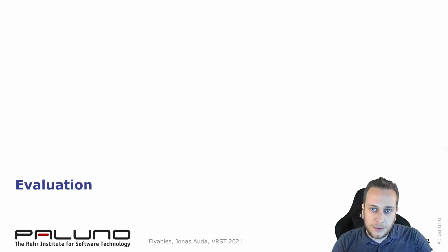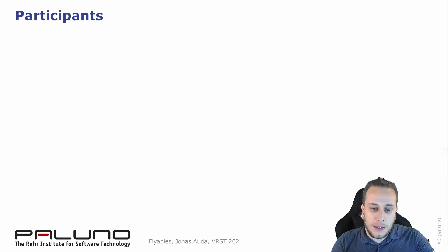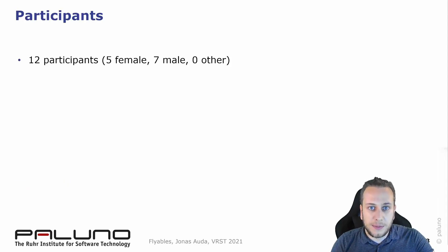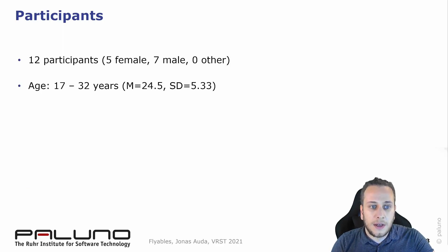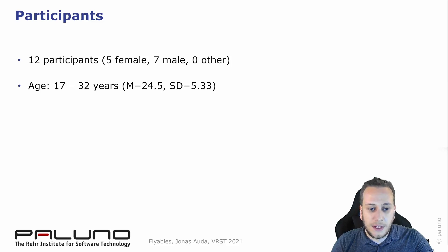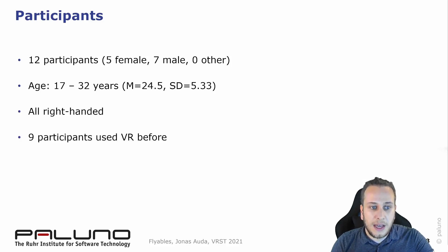We used these four scenes to evaluate the Flyables toolkit. We invited 12 participants: five female, seven male and none other. Our participants were aged from 17 to 32 years with an average age of 24.5 years. All participants stated that they are right-handed and nine of the participants had used VR before.